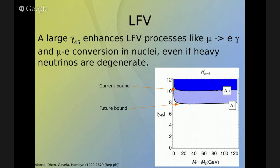Now comes lepton flavor violation. We see enhancement for processes like mu-e gamma decay and mu-e conversion in nuclei. We get a bound even if the neutrinos are degenerate. The plot shows the rates for mu-e conversion, which imposes the most stringent constraint. The current bound from the SINDRUM experiment with gold doesn't allow gamma_45 larger than 10. In the future, the Mu2e and COMET experiments probing mu-e conversion in aluminum might bound gamma_45 up to values of 8.